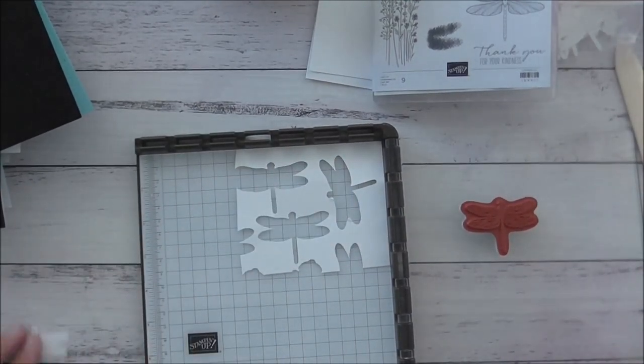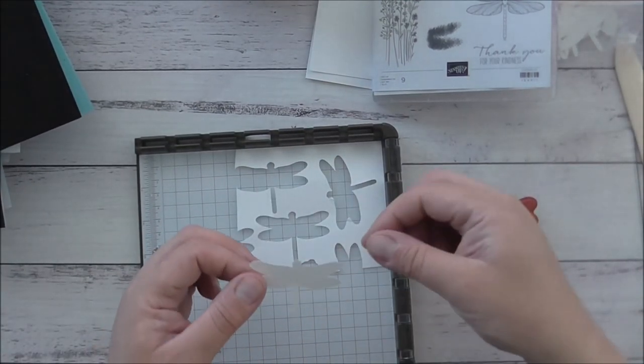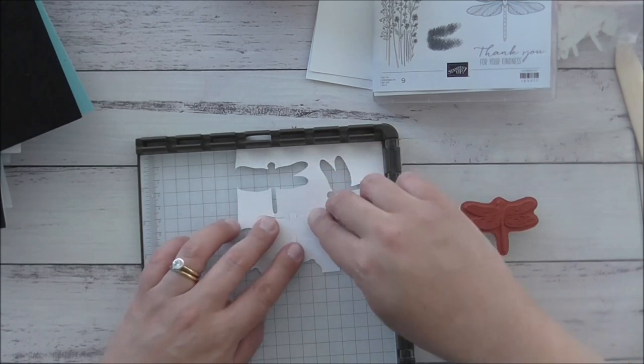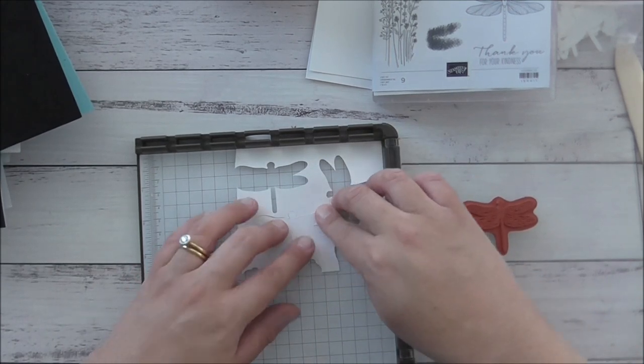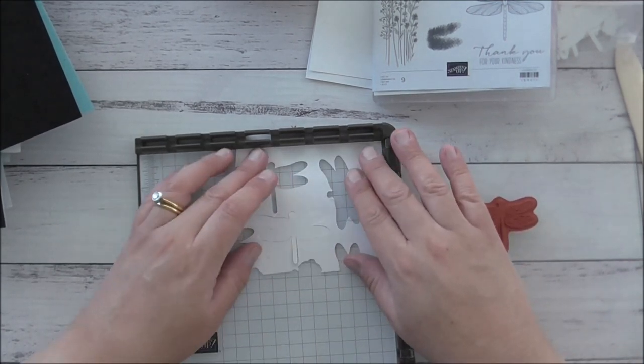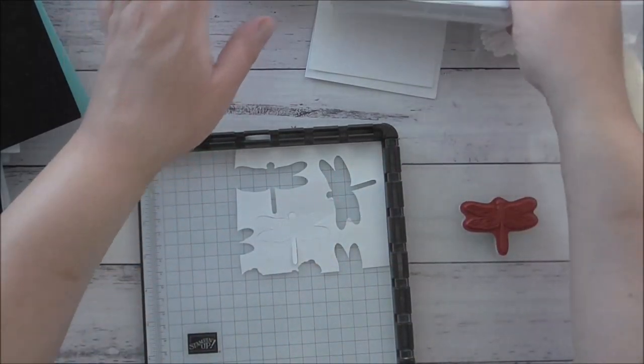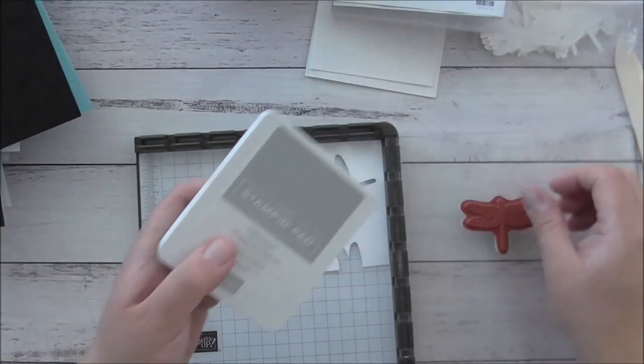So I'm going to now grab my dragonfly that I've cut out previously and I'll just fit that in like a jigsaw puzzle, so you can punch out all of these dragonflies in advance and do it that way and have them ready.